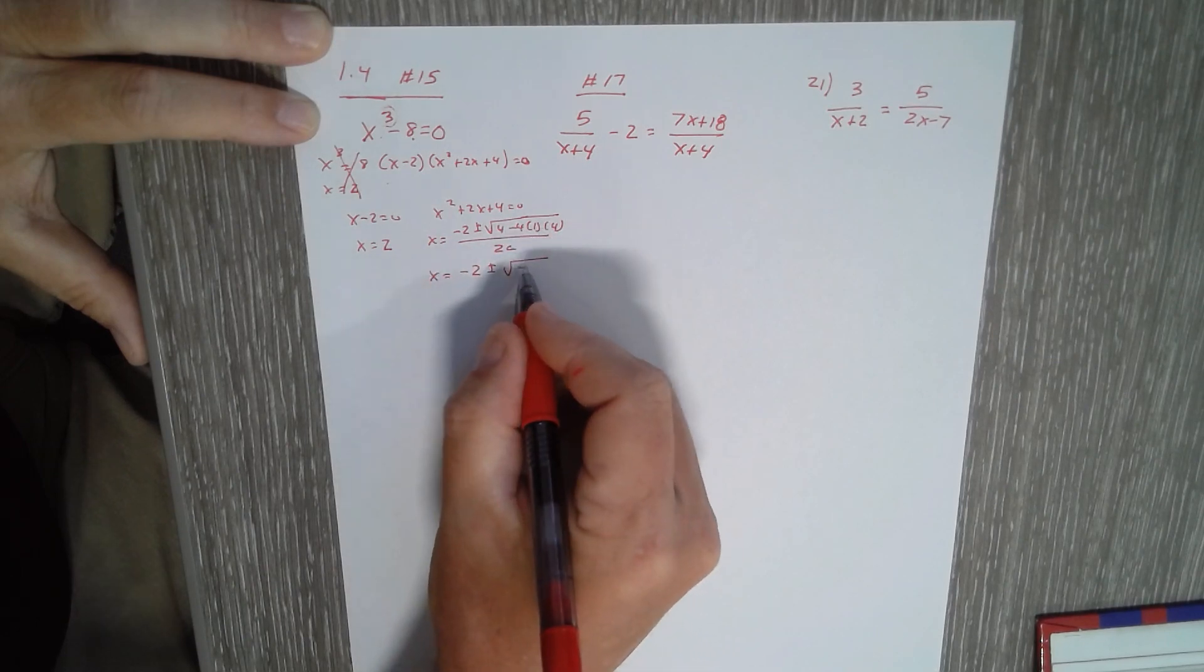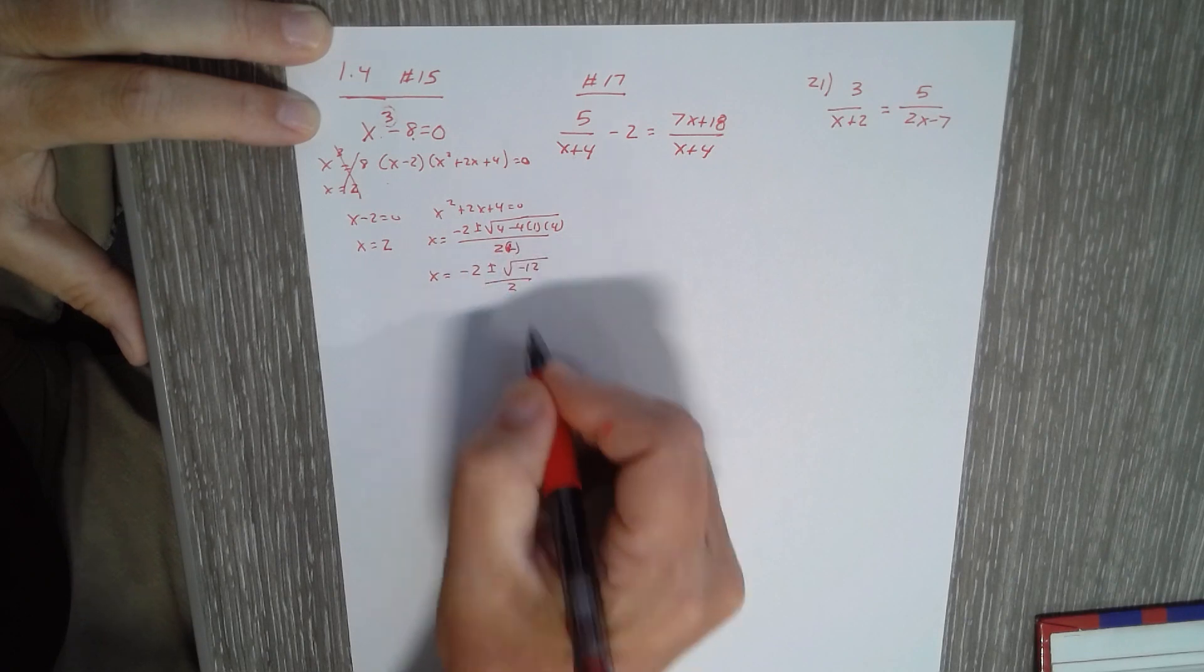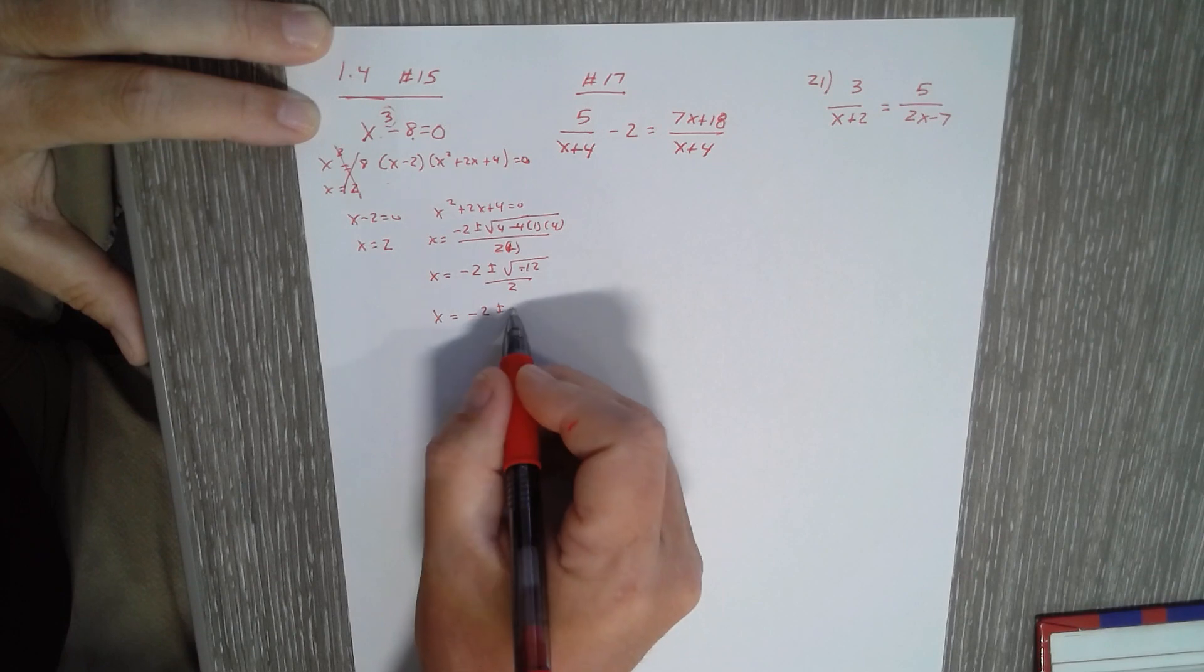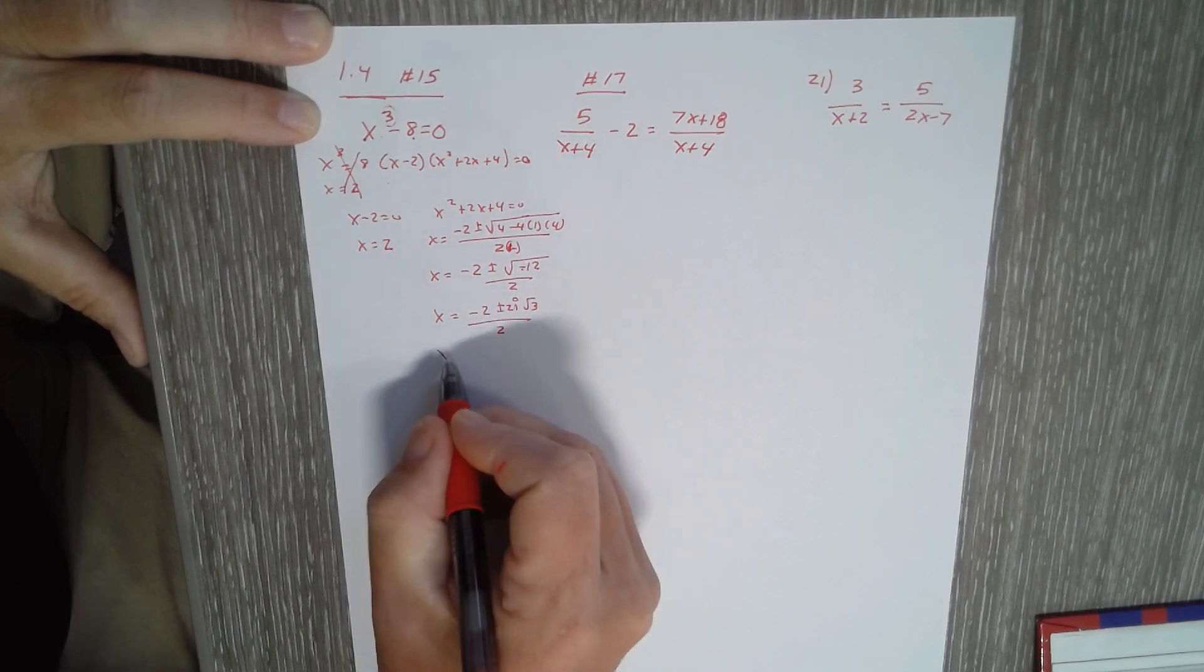This is 4 minus 16, so negative 12, and a was 1 there. Negative 2 plus or minus, pull the imaginary out, this becomes 2i square root of 3, and divide everything by 2.